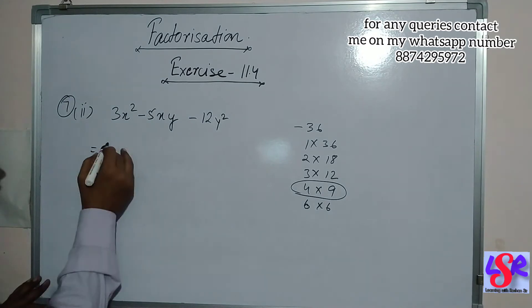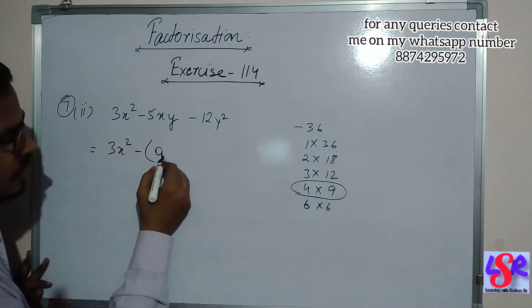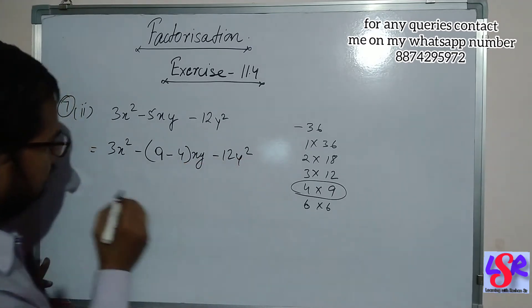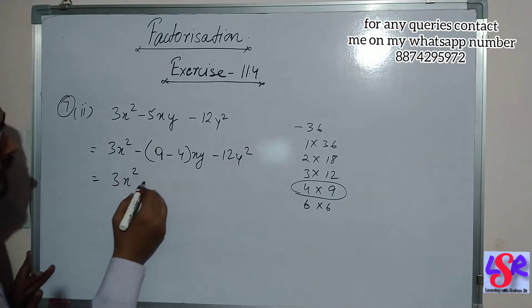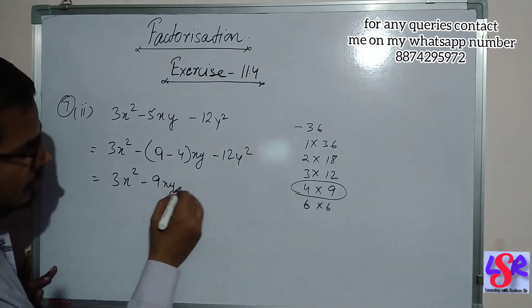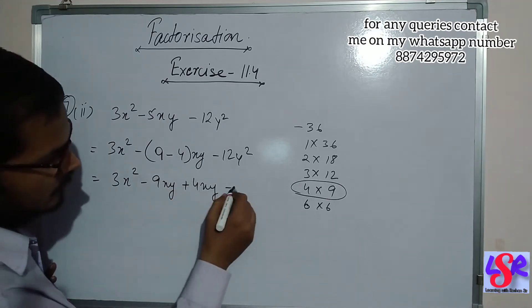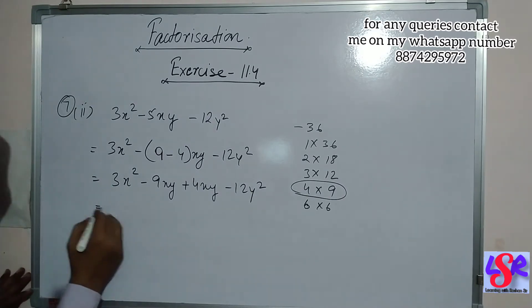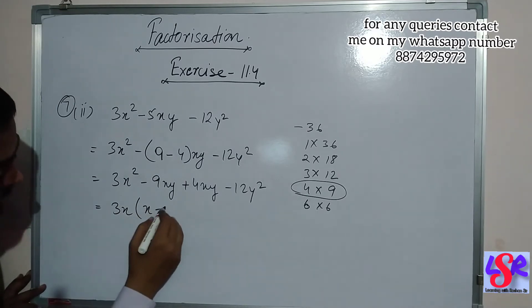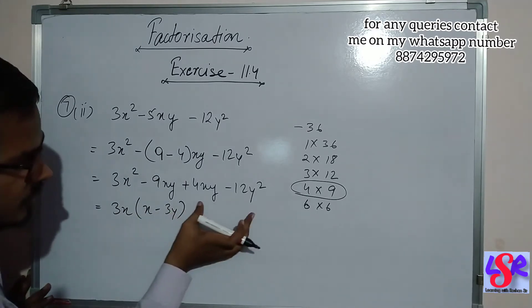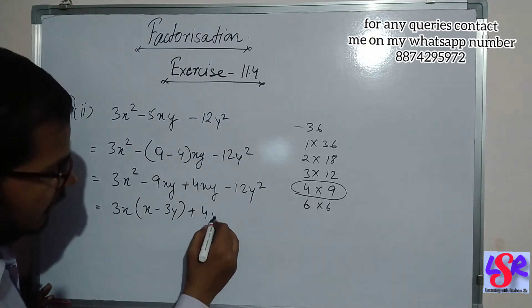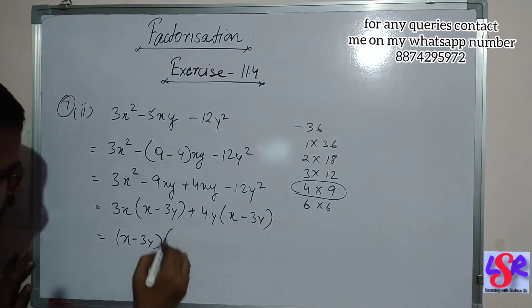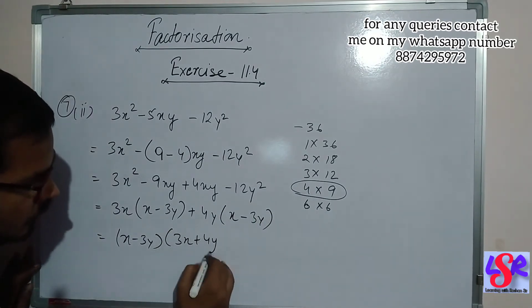So we rewrite this as 3x square minus 9xy plus 4xy minus 12y square. Taking 3x common from the first two gives x minus 3y, and taking plus 4y common from the last two also gives x minus 3y. Taking x minus 3y as common, the answer is x minus 3y into 3x plus 4y.